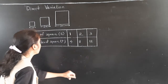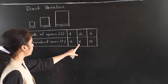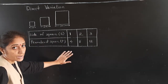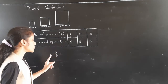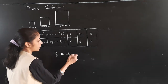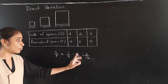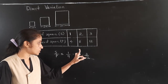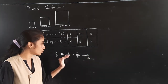Observing the table: when side S is 1 meter, perimeter P is 4; when S is 2 meters, P is 8; when S is 3 meters, P is 12. The ratio S upon P gives 1 upon 4, 2 upon 8, and 3 upon 12. Simplifying each to lowest terms, all give 1 is to 4 — the ratio is constant.